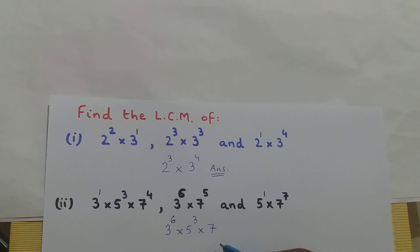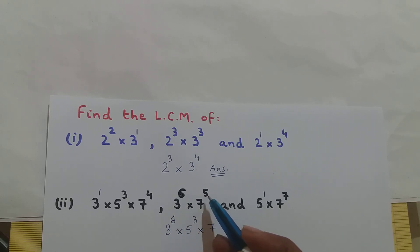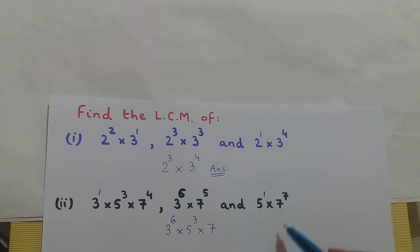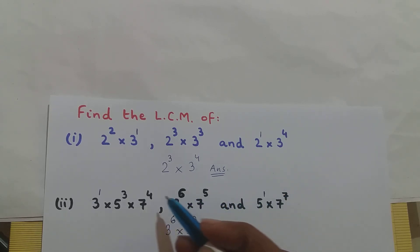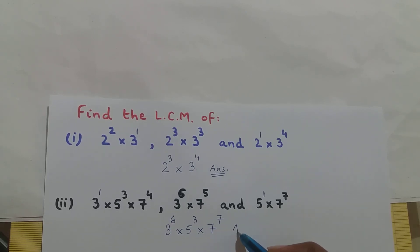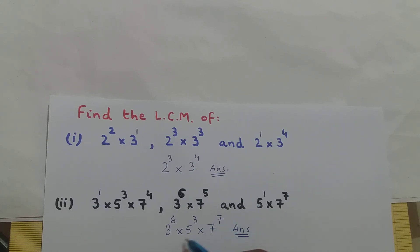Now what is the exponent of base 7? In the first expression I have 7⁴, in the second I have 7⁵, and in the third I have 7⁷. Pick the greater exponent — 7 is greater than 5 and 4 — so the exponent of base 7 is 7. And this is your answer for question number 2: the LCM is 3⁶ × 5³ × 7⁷.